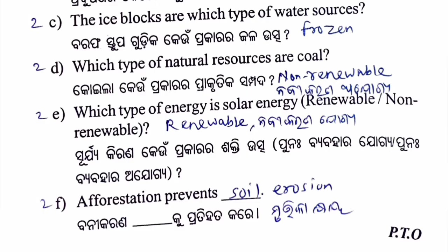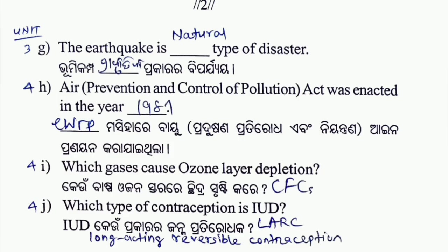Which type of energy is solar energy — renewable or non-renewable? Solar energy is renewable. The destruction of forests leads to soil erosion. The earthquake is a type of natural disaster. The Air Prevention and Control of Pollution Act was enacted in a specific year.